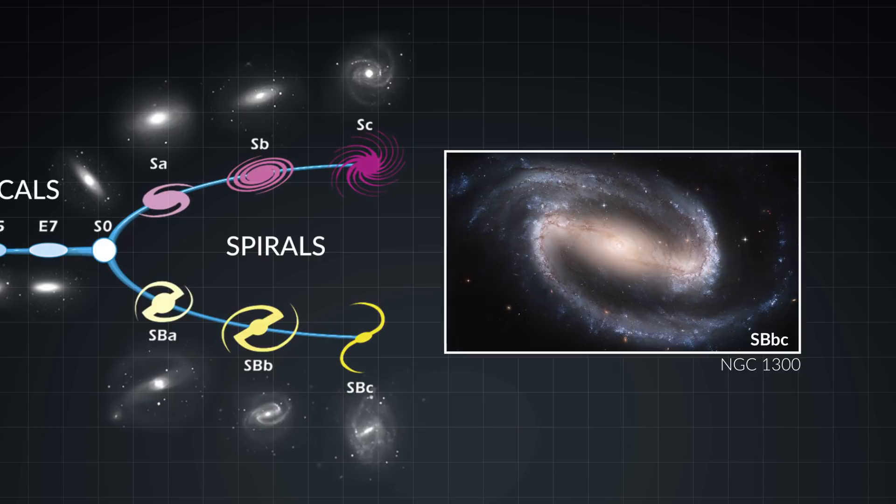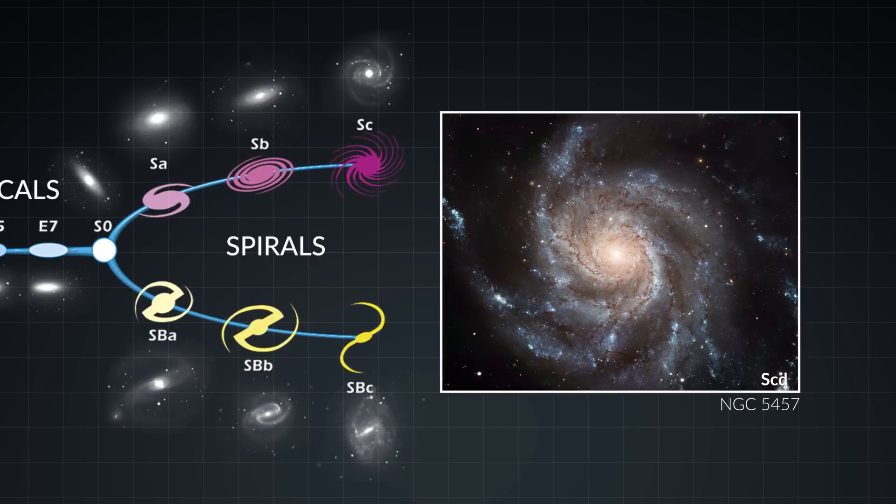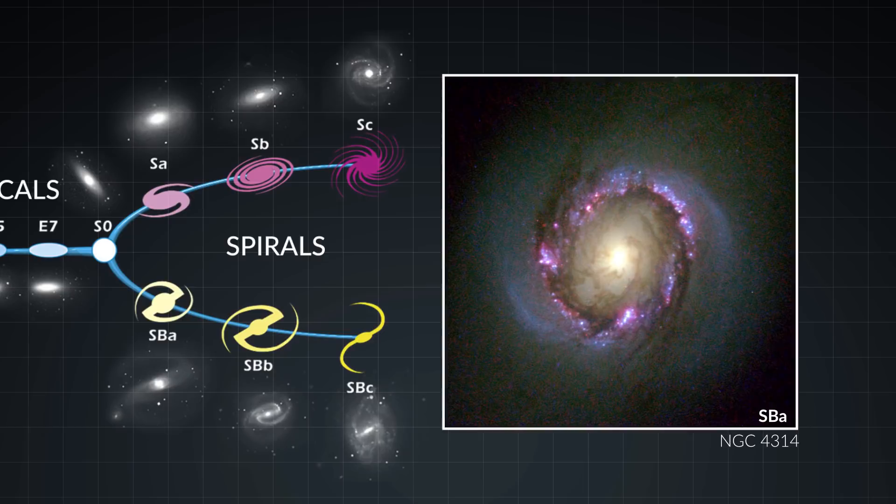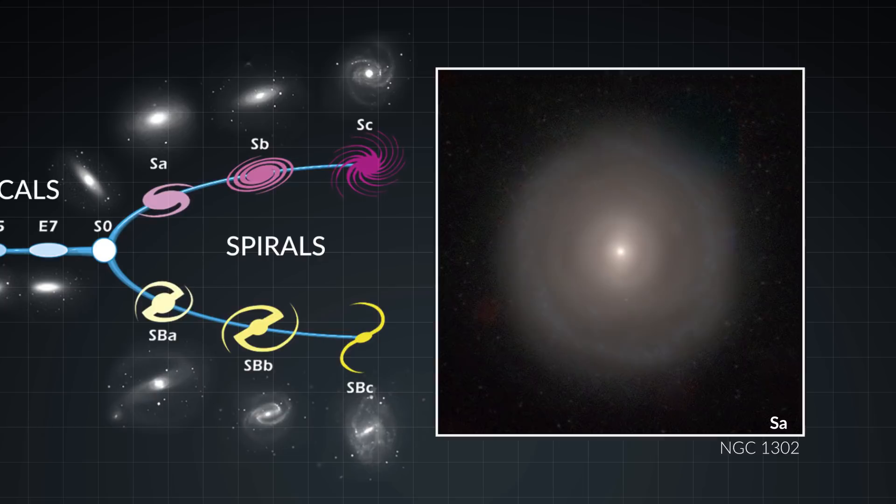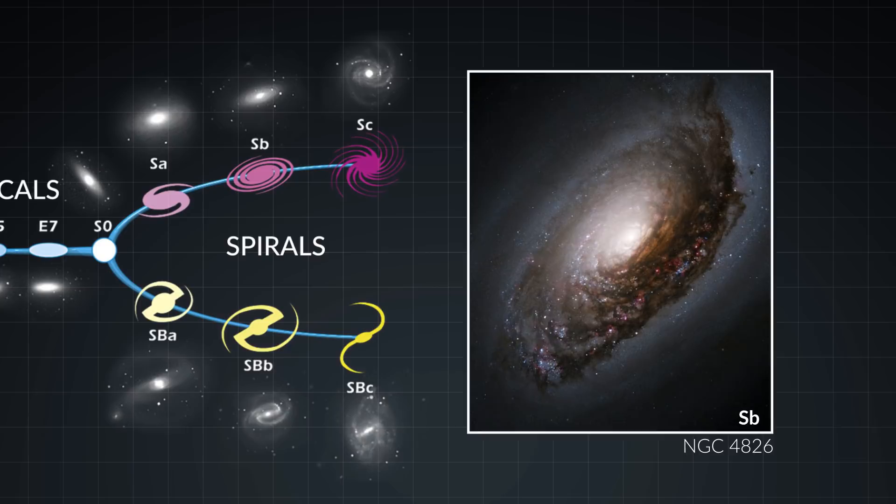Based on the Hubble classification system, if a galaxy has tightly wound spiral arms and a large nucleus, it's given a subdivision labeled by the letters capital S, lowercase a. As the spiral arms are less tight and the nucleus is smaller, the designations progress alphabetically from S, B, S, C, and S, D.